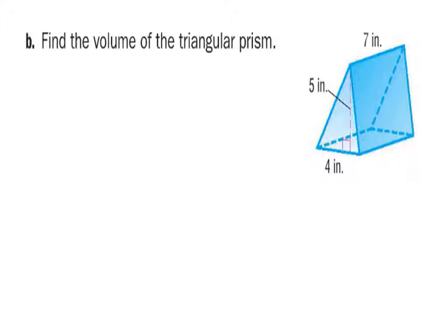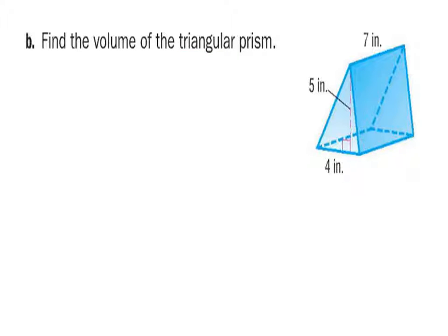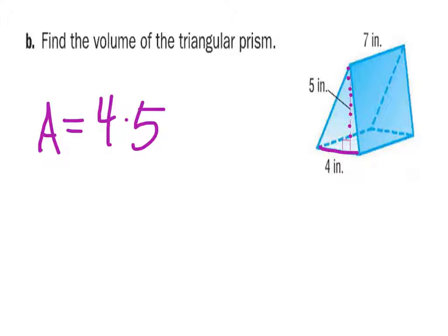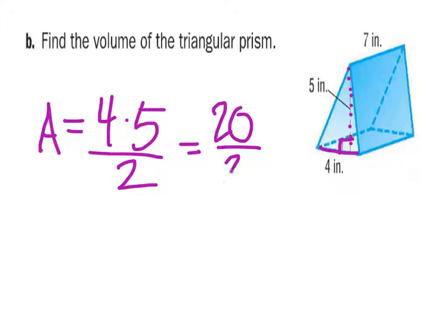Let's look at this next example using the area of the base. We need to find the area of the triangle first since it is a triangular prism. The area of a triangle is the base — which in this case is 4 — times the height, which is 5, shown along the pink line at a 90-degree angle, divided by two. So 4 times 5 divided by 2 equals 20 divided by 2, which gives us 10 inches squared.